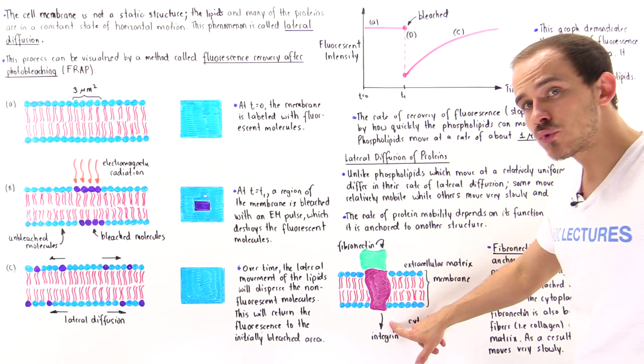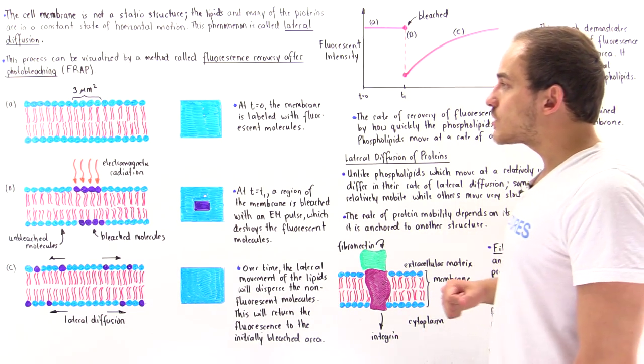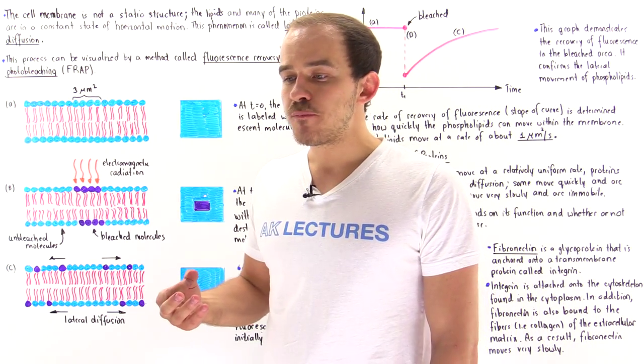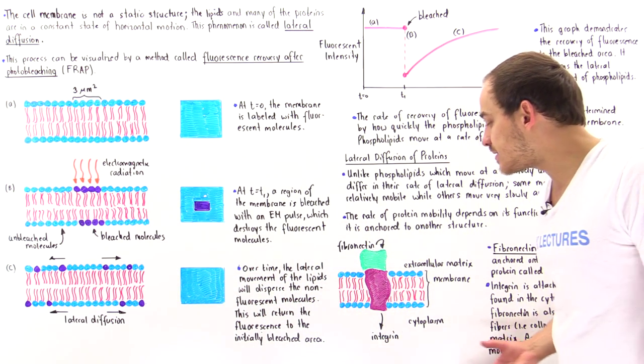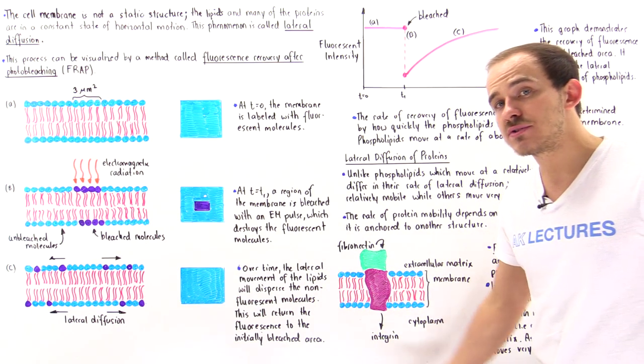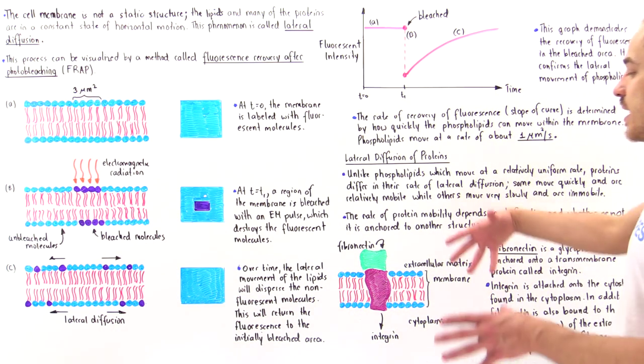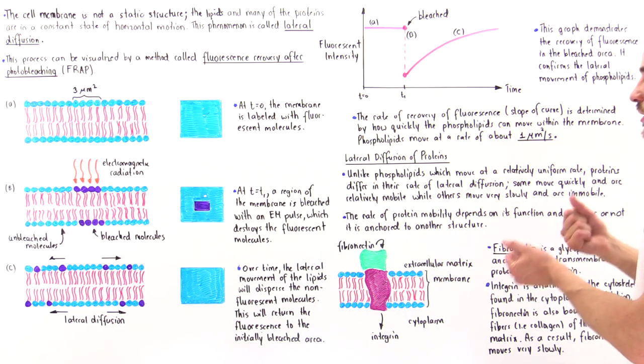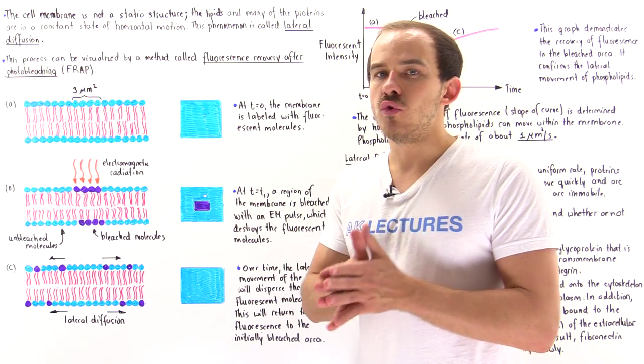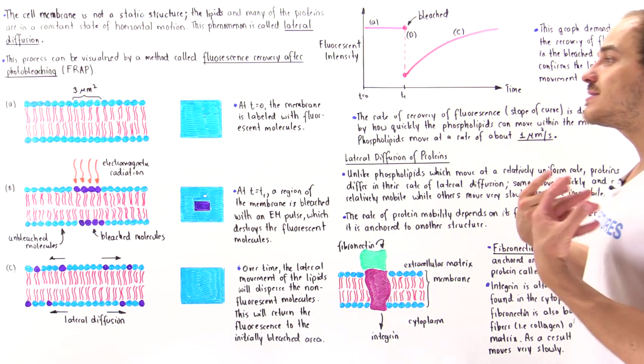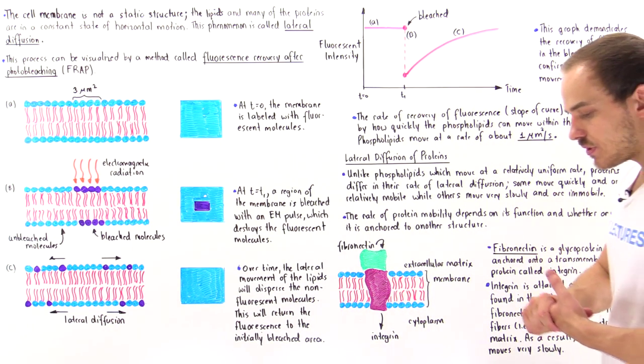On top of that, the integrin is actually also attached onto the actin filaments that are found inside the cytoplasm, inside the cytoskeleton and the cytoplasm. So, because of all these anchoring positions and attachment points, fibronectin doesn't actually move. It moves very slowly. It's essentially immobile.